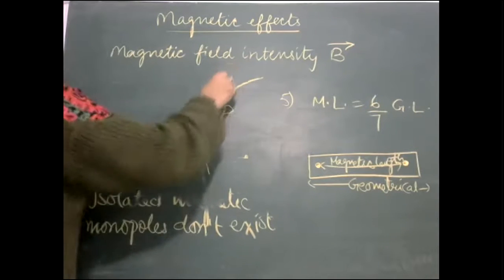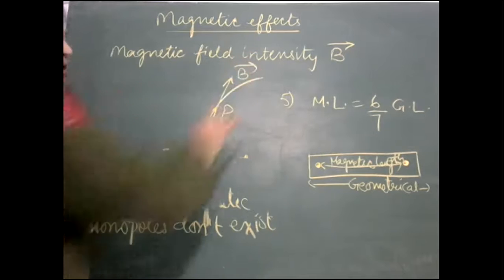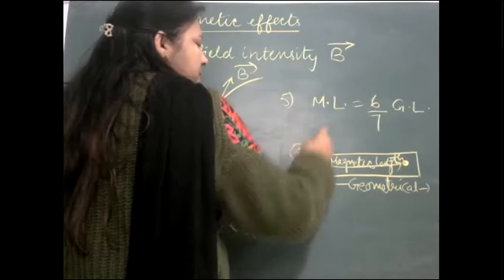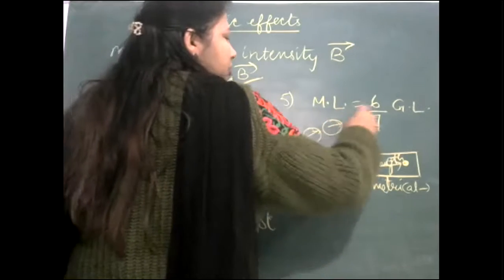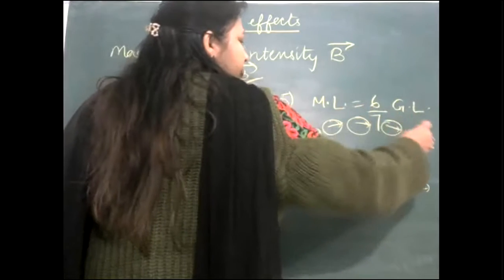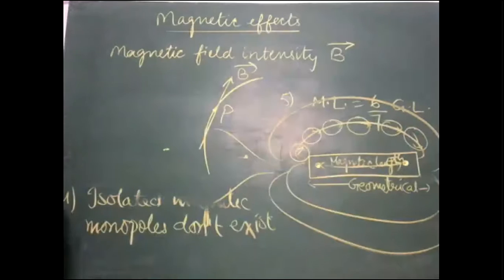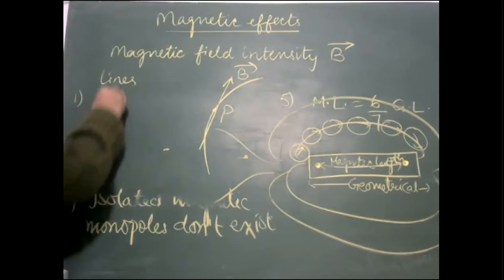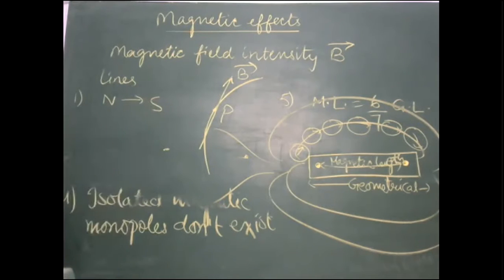The core definition: at any point, the tangent to the magnetic line gives the direction of magnetic field intensity. If we move a bar magnet around a compass needle, wherever it points to the north pole, that path traced will be the magnetic line. The first property of magnetic lines is that they direct from north pole to south pole outside the magnet.